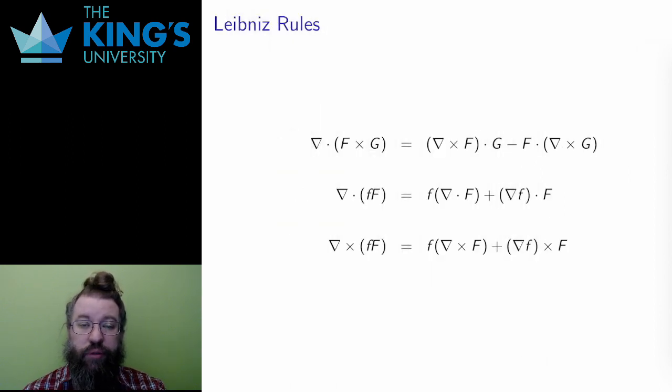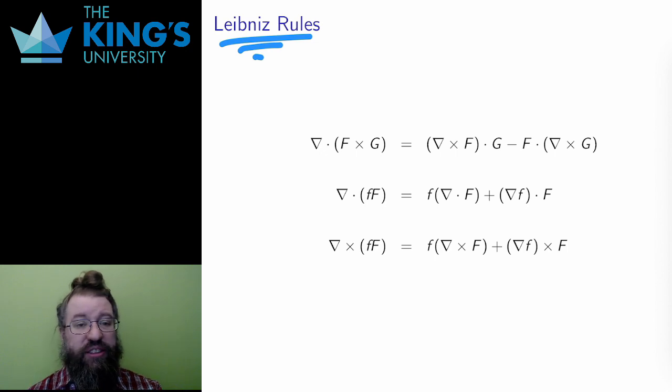These are derivatives, so they should have some kind of Leibniz rule, some product rule. But what products actually make sense? Some of these act on vector fields, and some act on scalar fields. So I have to make sure that whatever product I'm using, the operations actually line up with them. Here, then, are three identities.